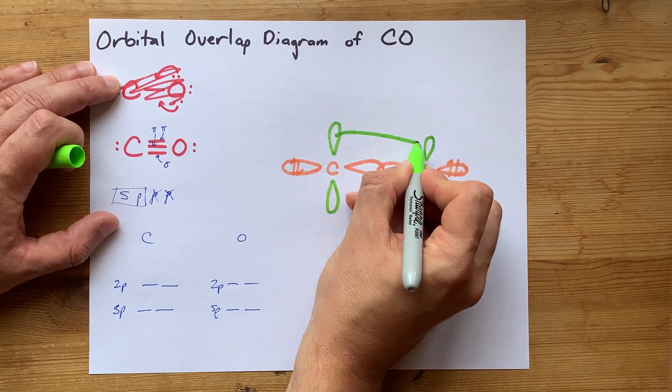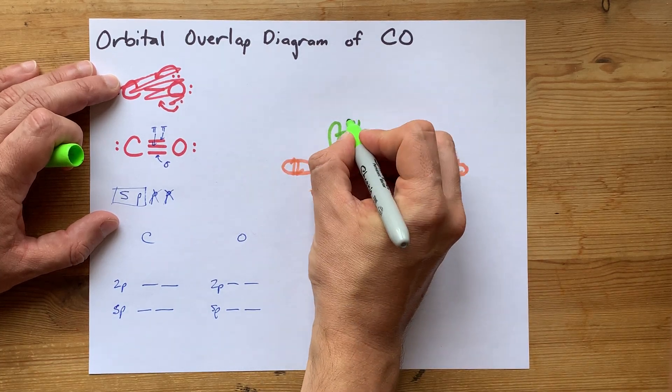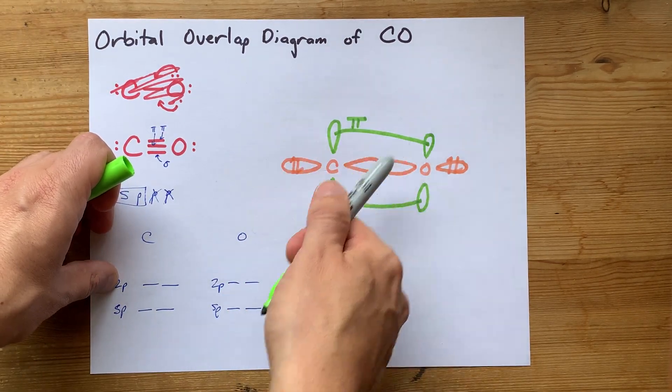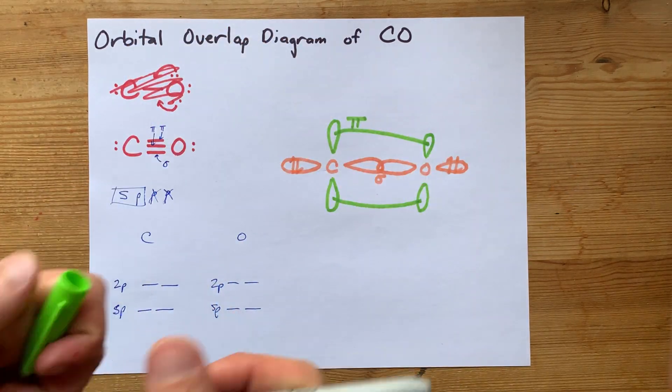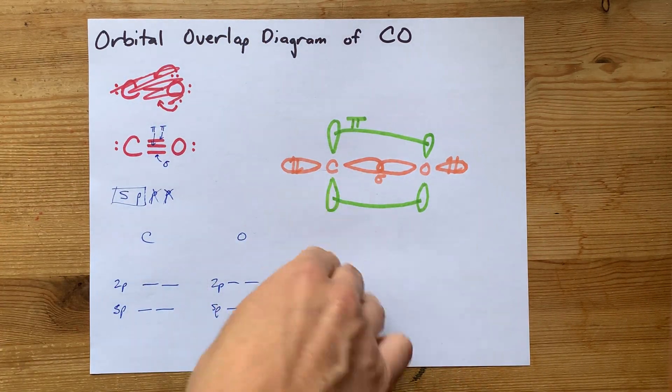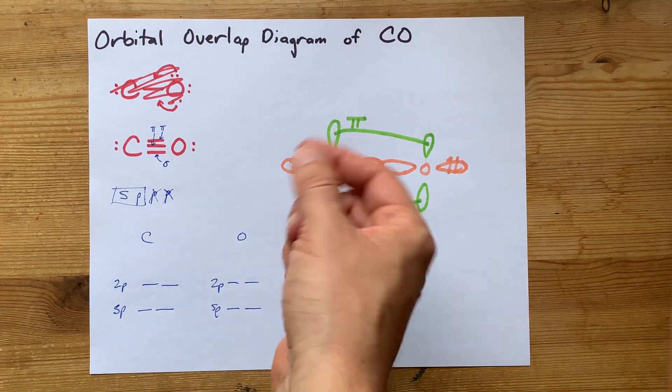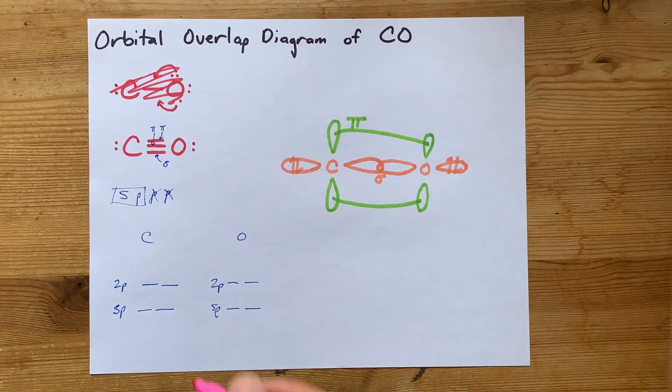The sideways overlap of these two is what gives you one of the pi bonds. And I know it's weird you drew one, two lines. But because these have two lobes each, they fold over each other. And there's two regions of space where those electrons could be. And then we need the third bond between carbon and oxygen.